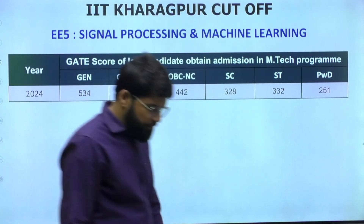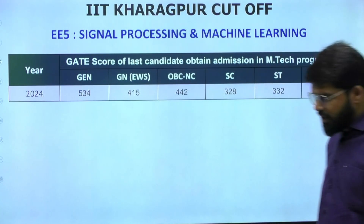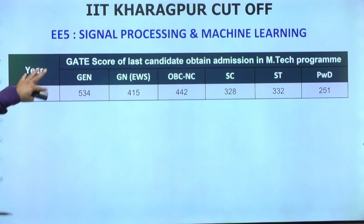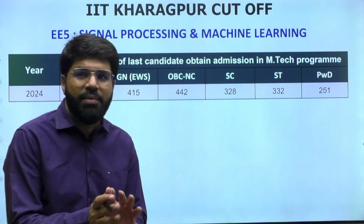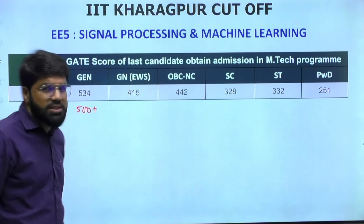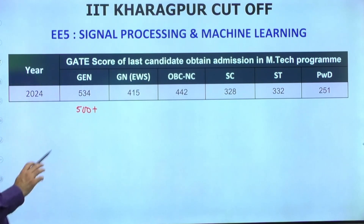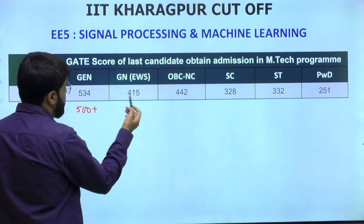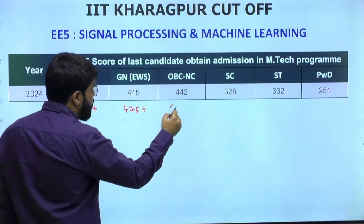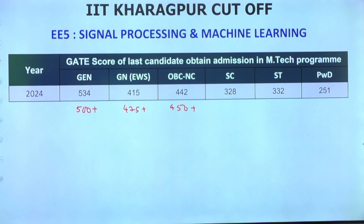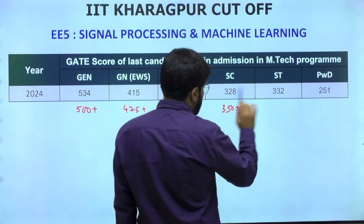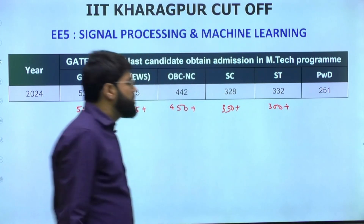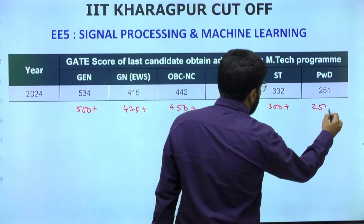The next specialization is EE5 - Signal Processing and Machine Learning. This is not the regular AI and ML course offered by CS; it's machine learning mixed with signal processing, offered by the Electrical Engineering department. The last year cutoff was 534. Safe score recommendations: General - 500+, EWS - 475+, OBC - 440-450+, SC - 350+, ST - 300+, PWD - 250+.